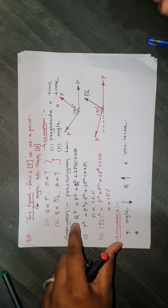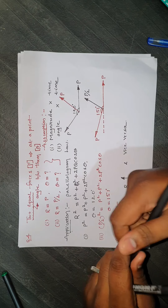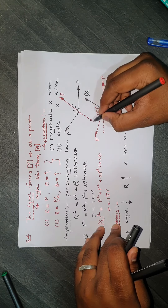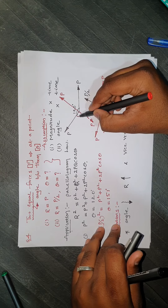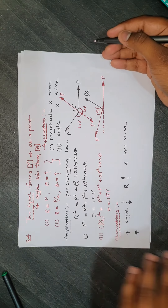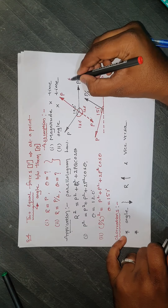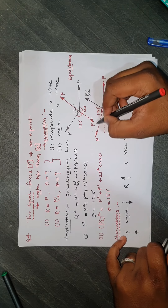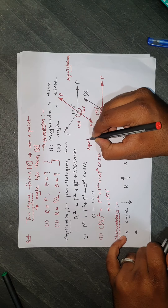Another observation from the first diagrammatic representation: if you add a force exactly opposite to the resultant, with the same magnitude P, each angle becomes 120 degrees. The force added to make the system reach equilibrium is called the equilibriant.